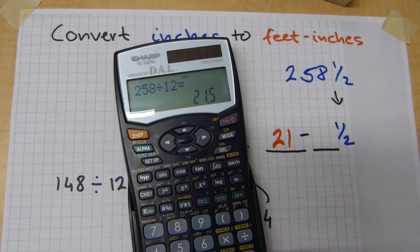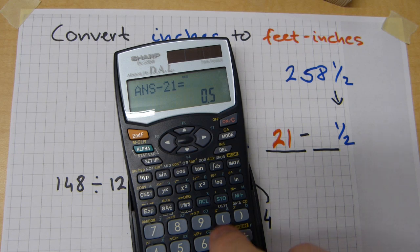0.5 is easy. But I'm gonna follow the steps. Minus the 21 is half a foot. Half a foot is obviously gonna be 6 inches. But I'm gonna follow the steps. Multiply this by 12. 6 inches there.